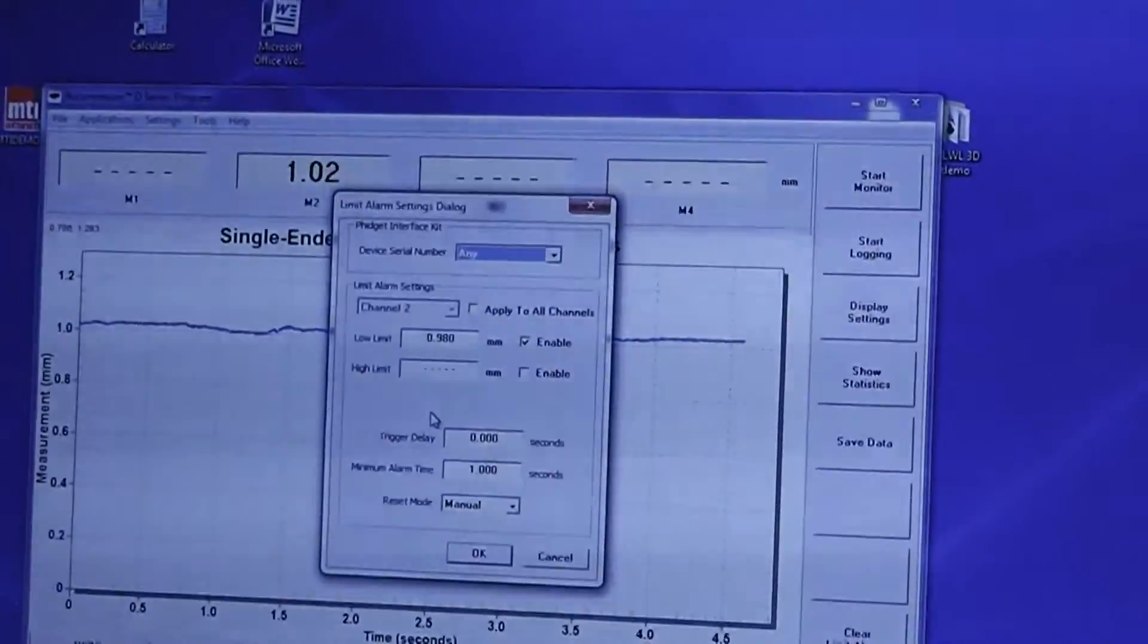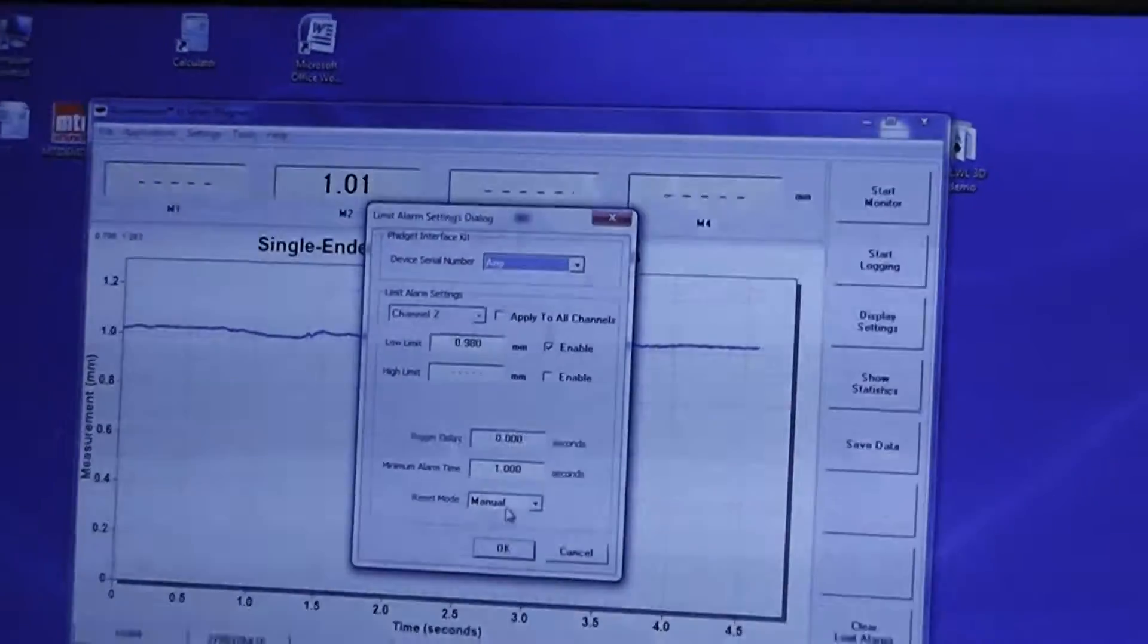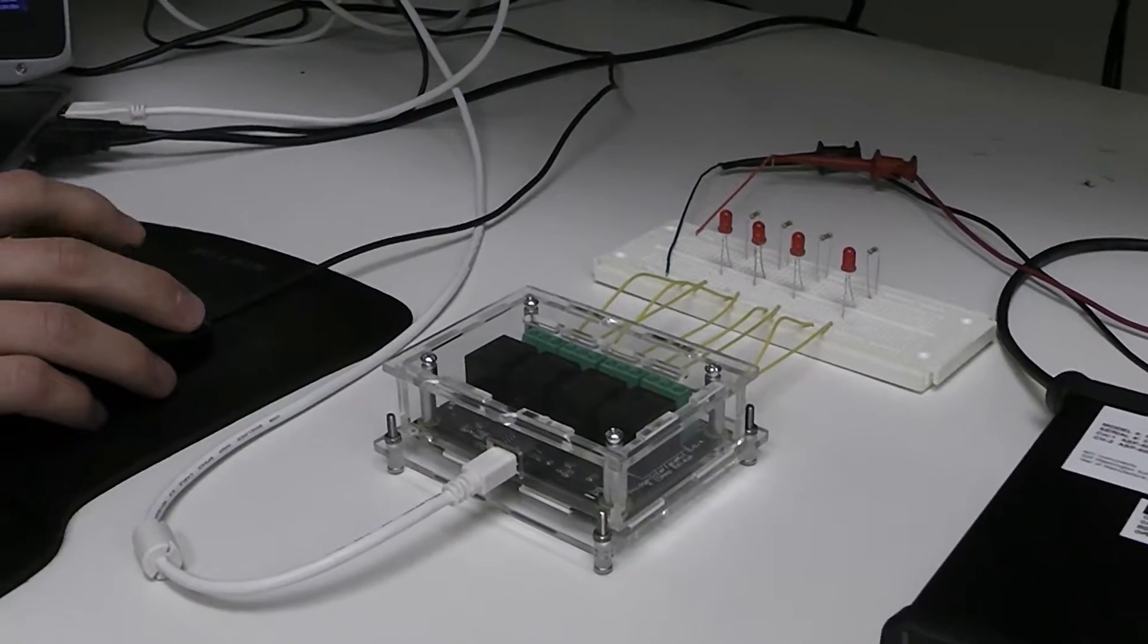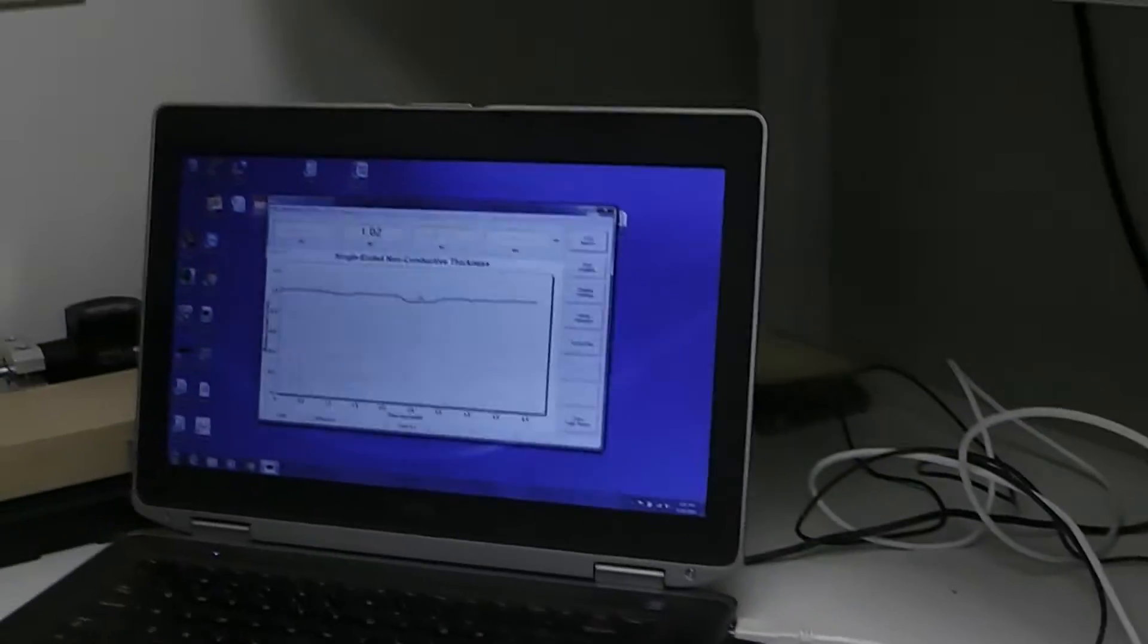And right now, we have a manual reset on the alarm, so once it trips, it'll stay tripped until we manually reset it. And we'll be able to see the chart of the thickness on the display over here once we get started.